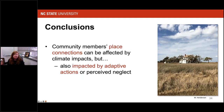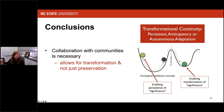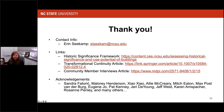Community members' place connections can be affected by climate impacts, but they're also impacted by adaptation actions or even perceptions of neglect. Ultimately, the key take-home message is that collaboration with communities is necessary because it allows for transformation — not just preservation — to enable the persistence of significance as well as its transformation through persistent, anticipatory, or autonomous adaptation. With that, I'd like to thank you for your time and I'd be happy to answer any questions.